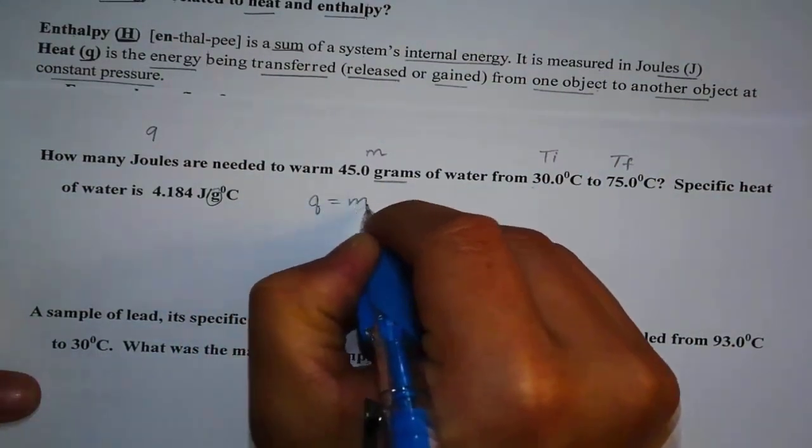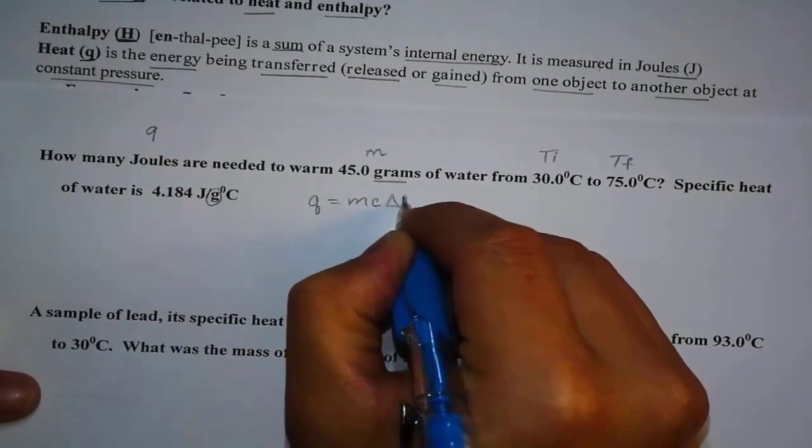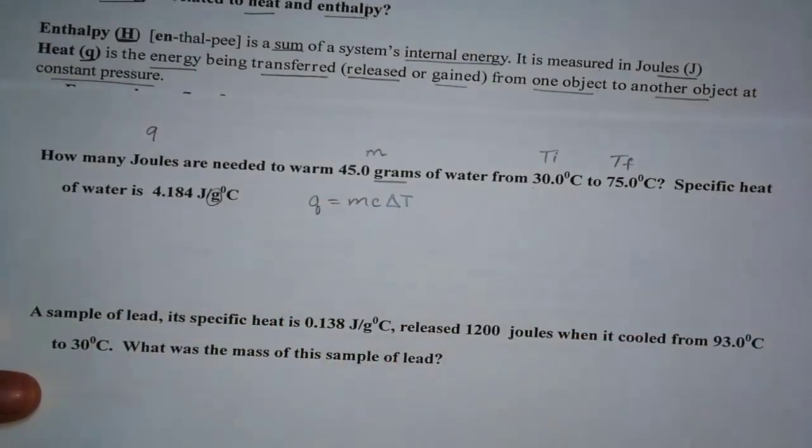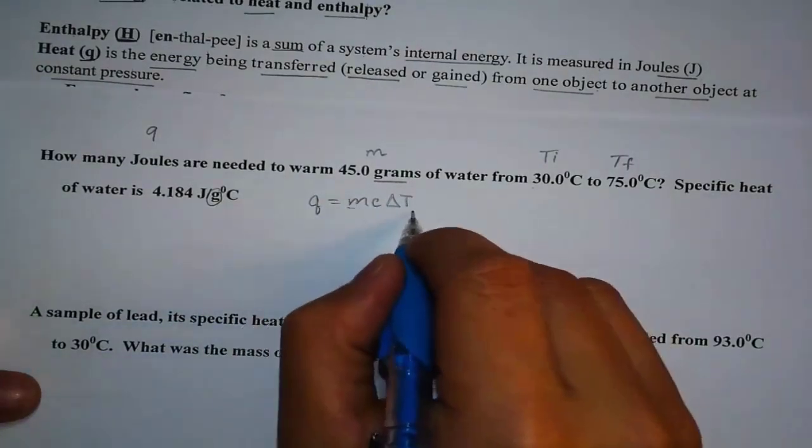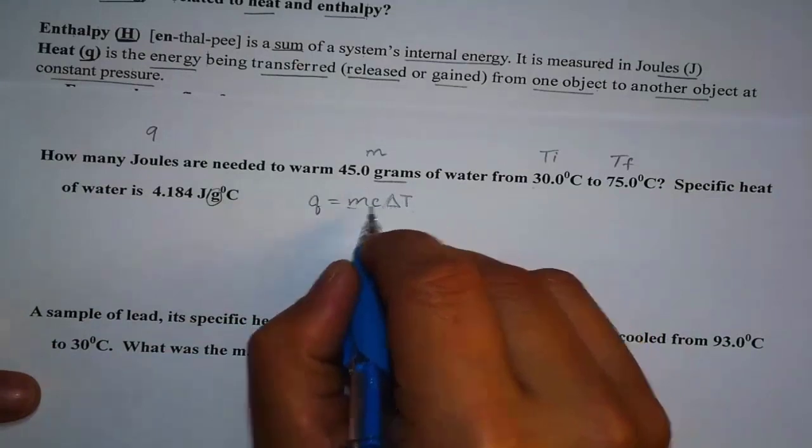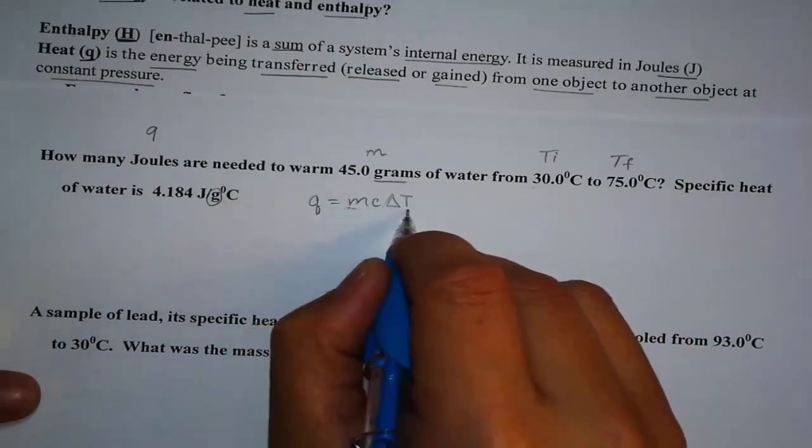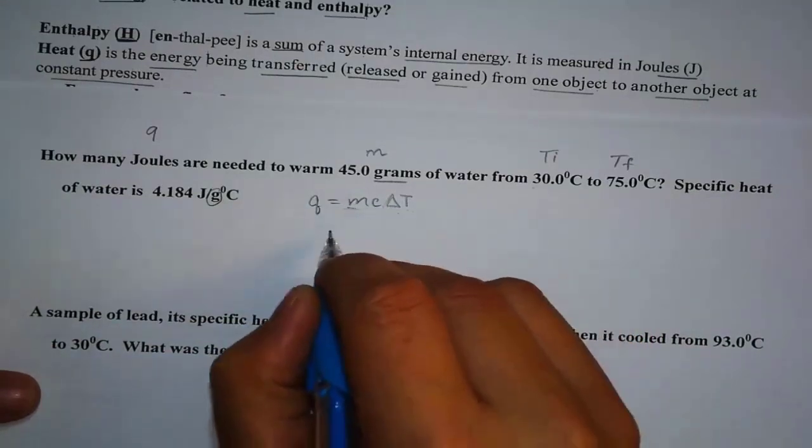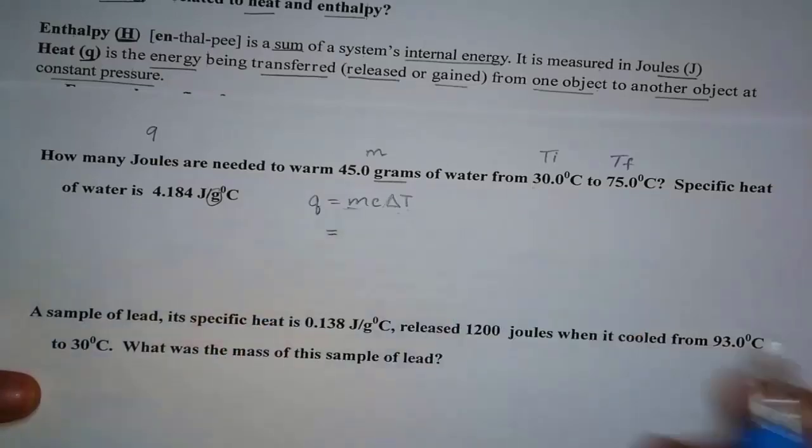We know that Q equals mcΔT. And one way you can remember this is MCAT. Think of the delta, it looks like the letter A, isn't it? So we call this MCAT. Q equals MCAT.